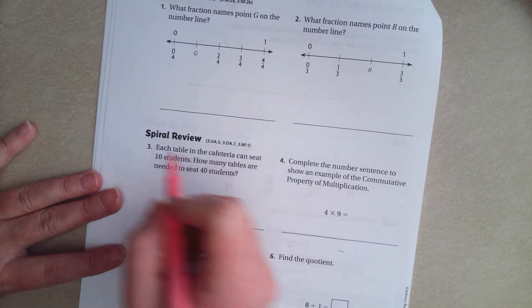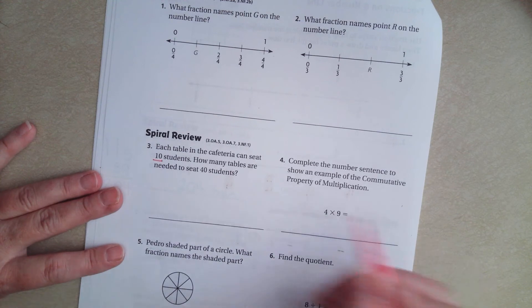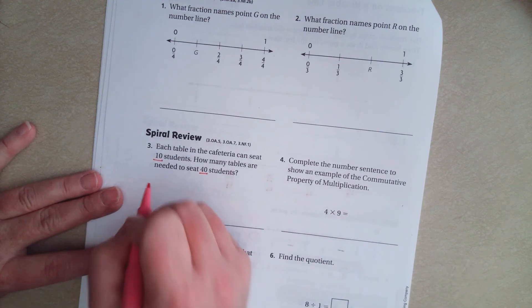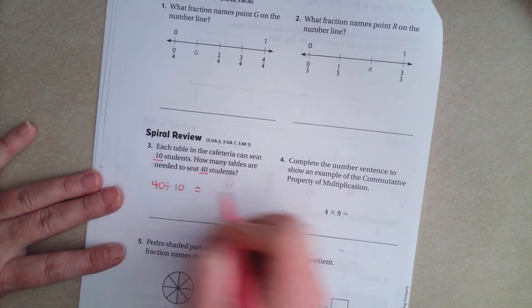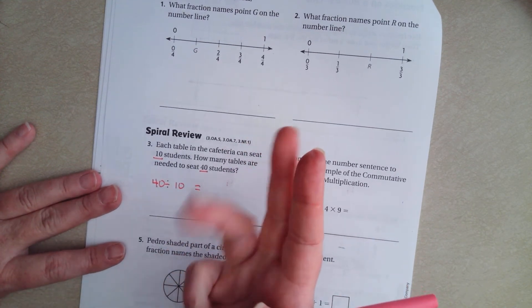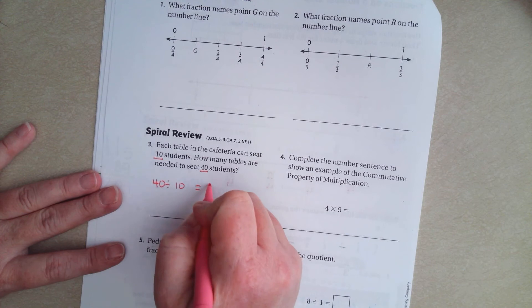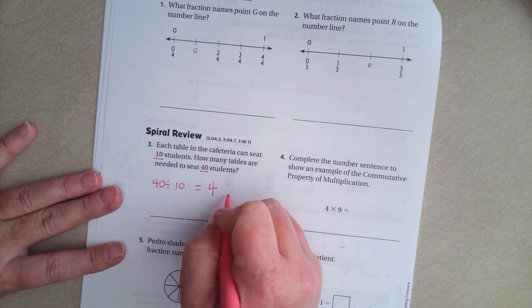Each table in a cafeteria can seat 10 students. How many tables are needed to seat 40 students? So, 40 students, 10 at each table. How many times does 10 go into 40? Well, 10, 20, 30, 40. That's 4. 4 tables.